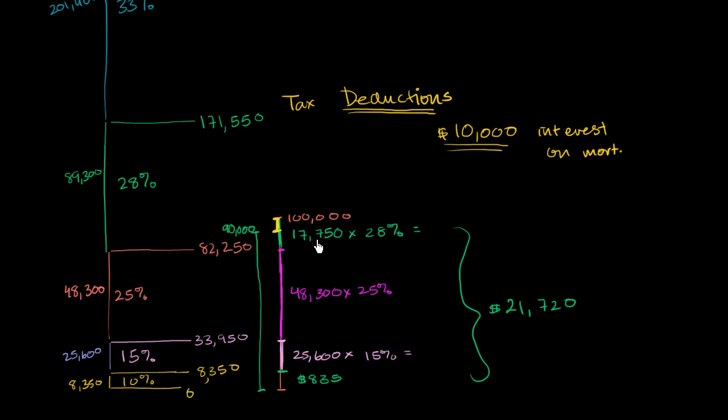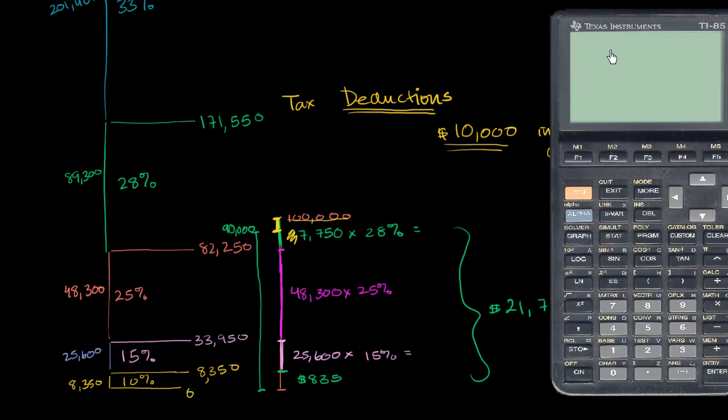Another way to think about it, instead of this being $17,750 times 28%, it would now be $7,750, because the reported income is now only $90,000. So the actual number, we can get our calculator out and just calculate it.